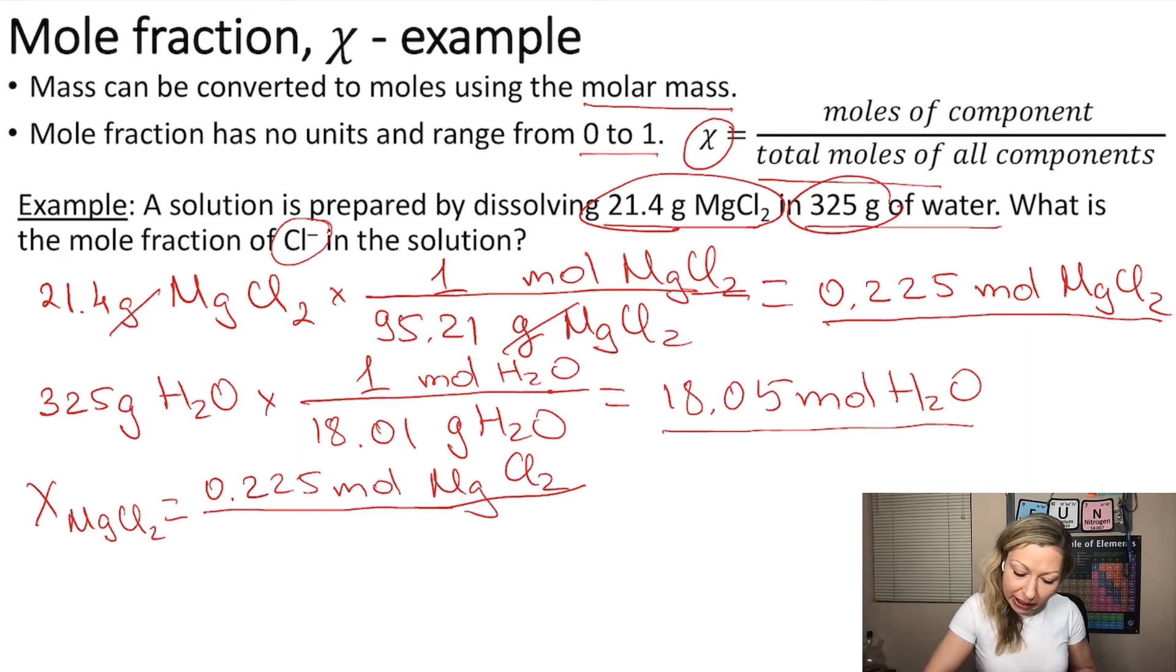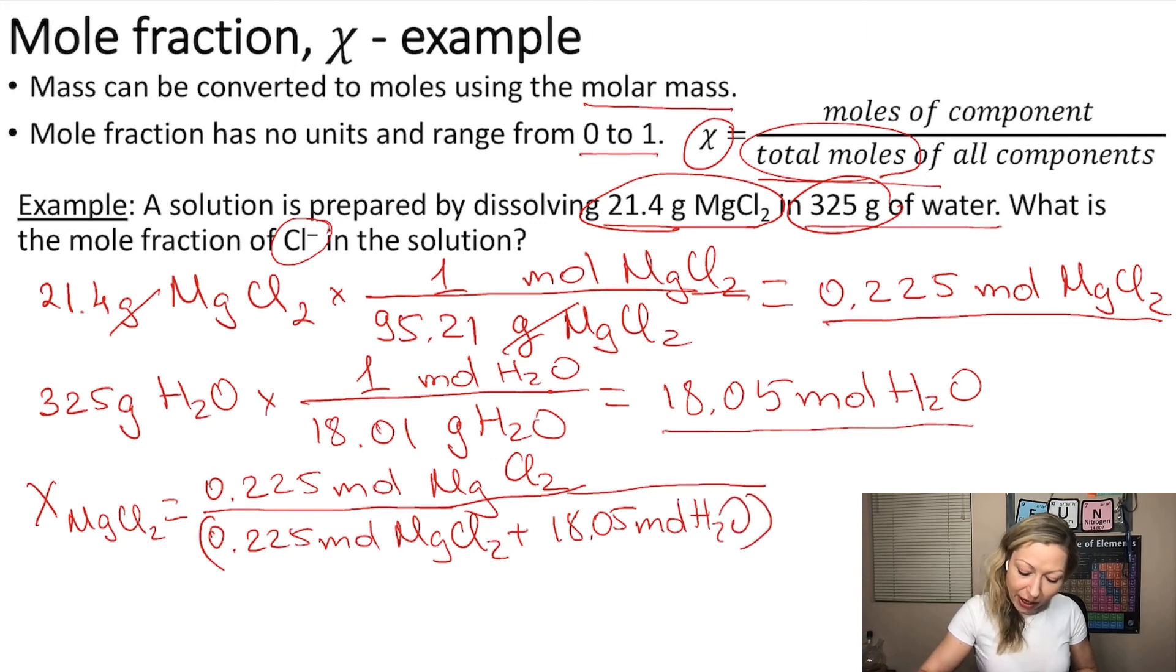On top, we have 0.225 moles of MgCl2. On the bottom, we need the total moles, so I take 0.225 moles of MgCl2 plus 18.05 moles of H2O. If we do this calculation, we get 0.123.